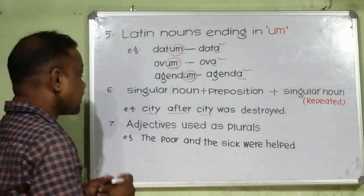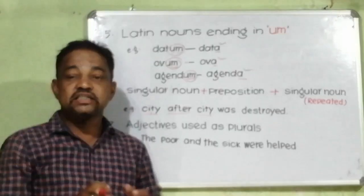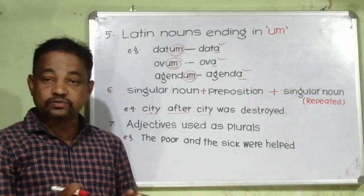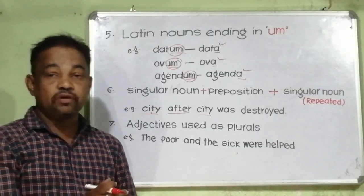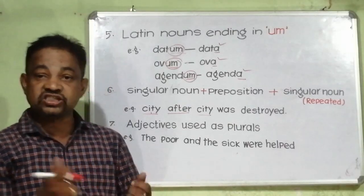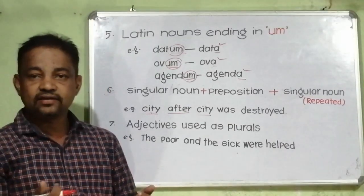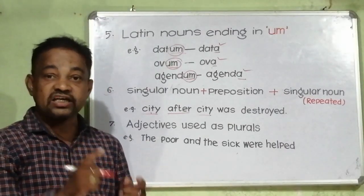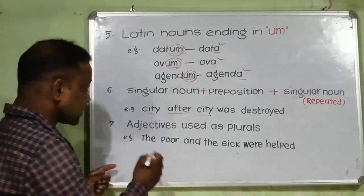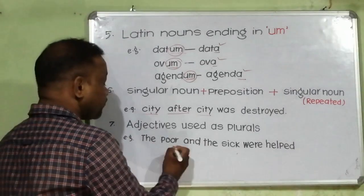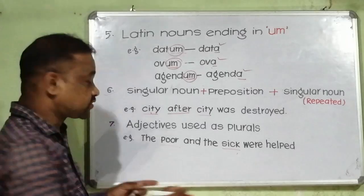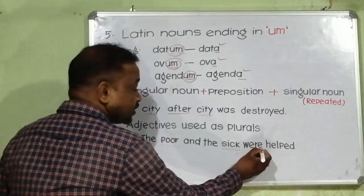Rule number seven: adjectives used as plurals. Sometimes we use some adjectives as plurals. For example, the poor, the sick — they look singular but they are adjectives that are used as plurals. For example, the poor and the sick were helped. Here that verb form is plural.